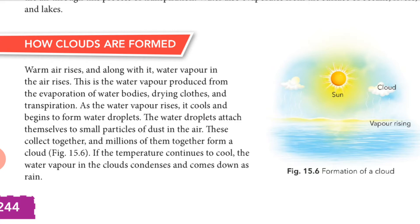Similarly, water evaporates from many water bodies — rivers, ponds, lakes, seas, and oceans — and also when we dry wet clothes. Transpiration in plants also adds water vapor to the atmosphere. When all this water vapor reaches a height and converts into water droplets, those droplets attach to tiny dust particles in the air, and millions of water droplets join together to form a cloud.